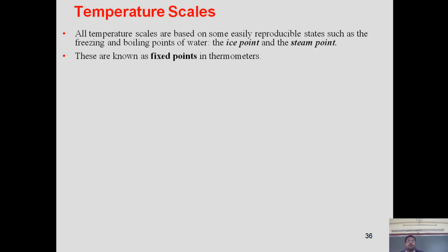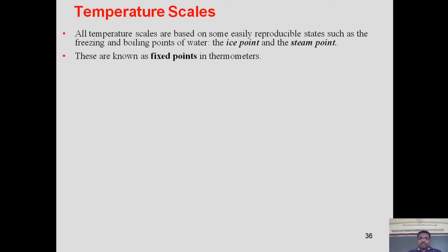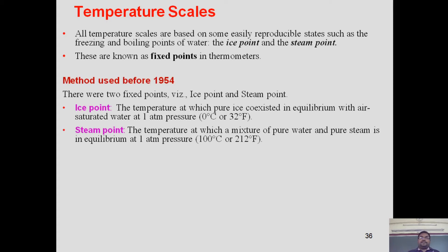All temperature scales are based on some easily reproducible states — the freezing point and boiling point of water. The freezing point is taken as 0 degrees and the boiling point as around 100 degrees. These are the two fixed points in thermometers. The method used before 1954 used two fixed points: the ice point and the steam point. The ice point is the temperature at which pure ice coexists in equilibrium with air-saturated water at one atmosphere.